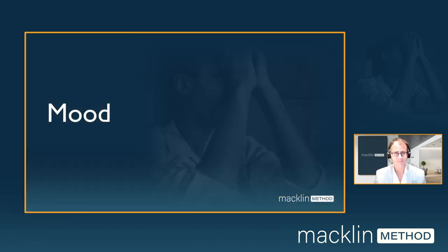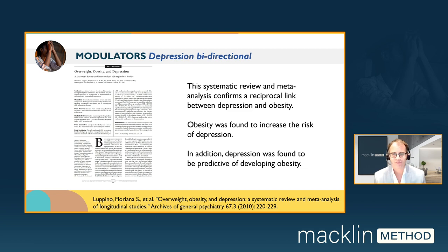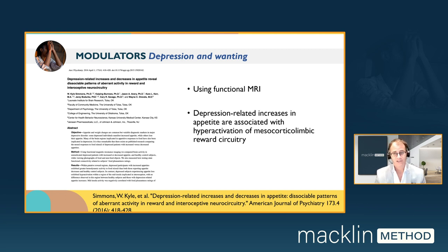What about mood? Depression specifically is considered bidirectional with obesity. A systematic review and meta-analysis confirms a reciprocal link: obesity increases the risk of depression, and depression is predictive of developing obesity. A clinical trial using functional MRI describes how depression-related increases in appetite are associated with hyperactivation of mesocortico-limbic reward circuitry — depression as a modulator specifically of the wanting component of the appetite system.